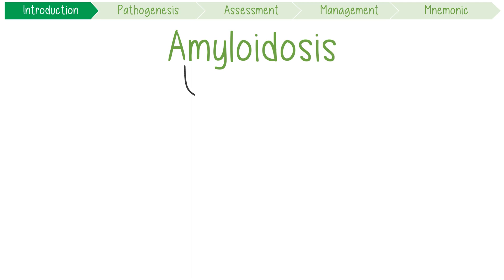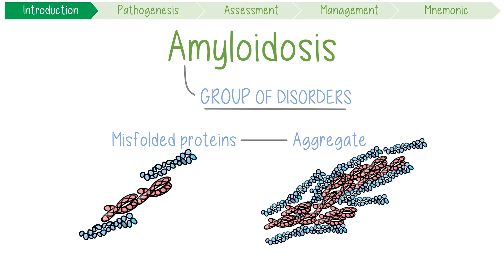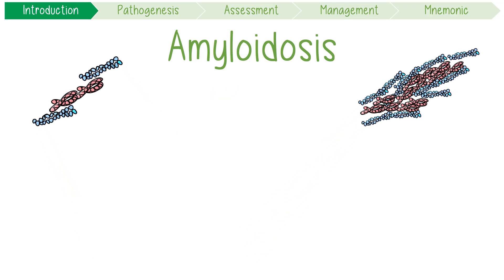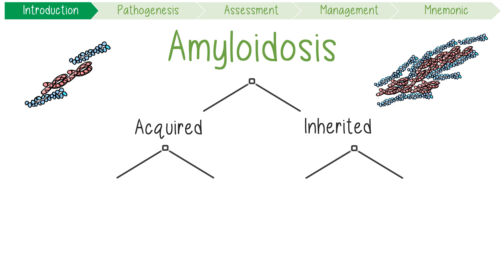Amyloidosis refers to a group of disorders in which misfolded proteins aggregate and deposit in various tissues. It's due to a variety of acquired or inherited conditions and is classified based on whether these insoluble protein fibrils cause systemic or localized disease.